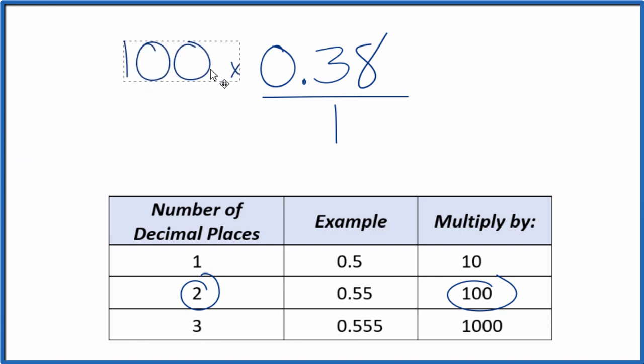So we multiply the numerator by 100. 100 times 0.38, that equals 38. So we have a whole number.